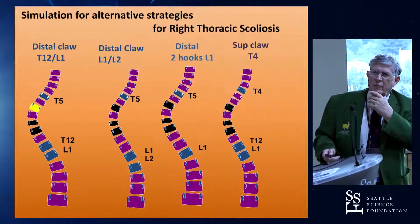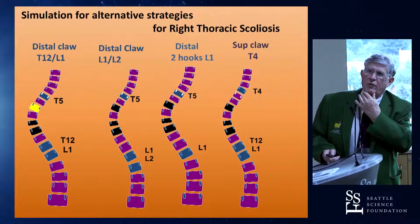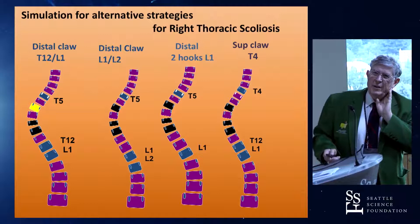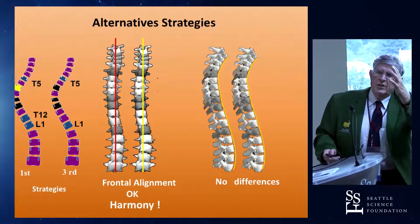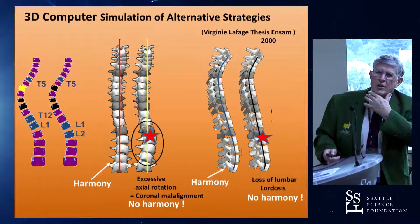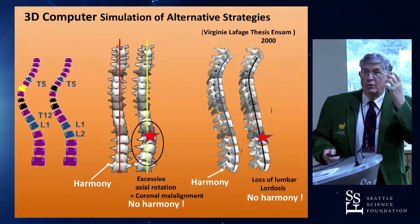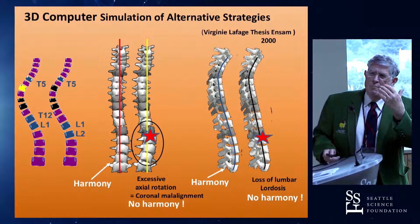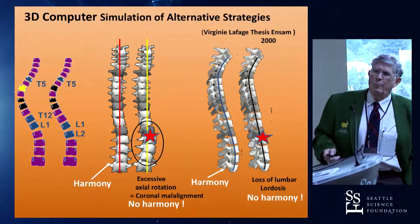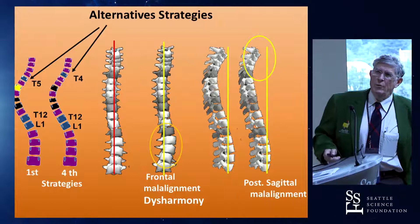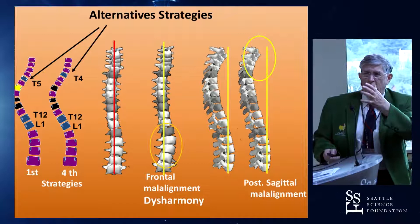For example, simulation of alternative strategies for right thoracic scoliosis: if you change the level of instrumentation, you will have this result. If you stay with this frontal alignment, it's okay — you have no difference. But you change one level only: instead of L1, you stop on L2. What happens? You have excessive axial rotation, coronal malalignment, and of course loss of lumbar lordosis. Every time you extend the fusion, you remove the ability of the spaces left free above and below to compensate. It is the same thing if you change only one level above: you have no harmony, you increase problems in both the lumbar area and the upper area.